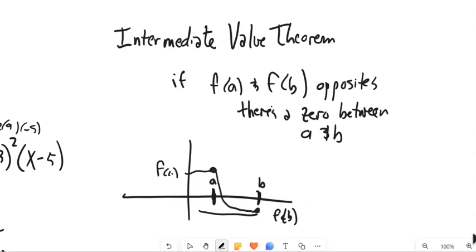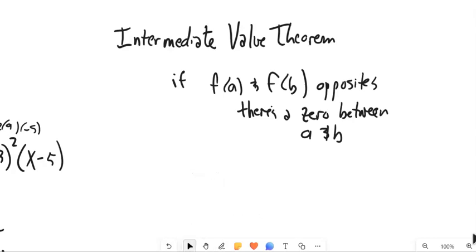You know, if it does it really early, if it waits till the last minute, or if it does it a bunch of times. Like, there could be a million of them. There has to be at least one. That's what Intermediate Value Theorem gives us.